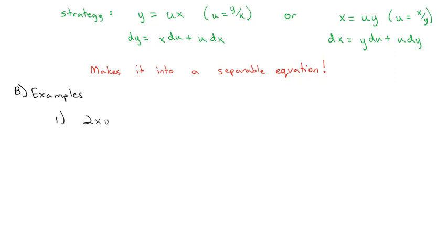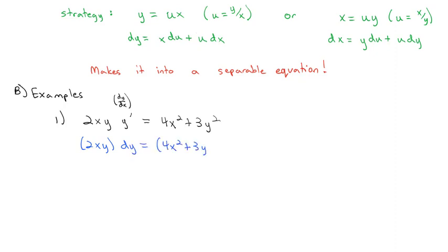Let's work through some examples. We start with 2xy·y' equals 4x² plus 3y². Writing y' as dy/dx and multiplying both sides by dx gives 2xy dy equals (4x² + 3y²) dx. To verify homogeneity, we take the M function 2xy and replace x with xt and y with yt. Pulling out the t's gives t² times 2xy, which matches the original function.